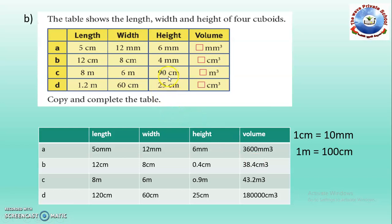Part C: length is 8 meters, width is 6 meters and height is 90 centimeters. Centimeters is a different unit — we need to find the solution in cubic meters. So convert 90 centimeters into meters, giving 0.9 meters. Now all of length, width and height have the same units, and after multiplication we get 43.2 cubic meters.